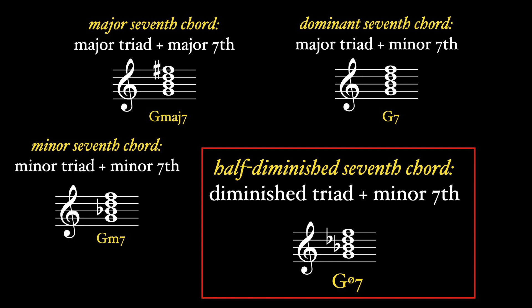Lead sheet notation for half diminished seventh chords involves a circle with a line through it, followed by the number seven. Jazz lead sheets more often use the nomenclature minor seven flat five for this chord.